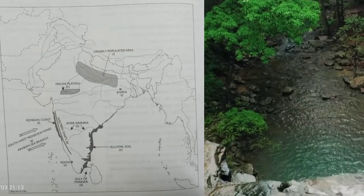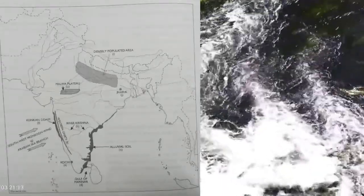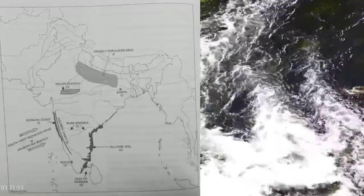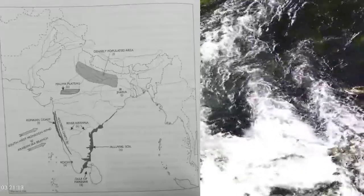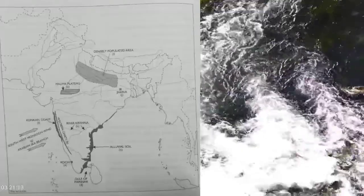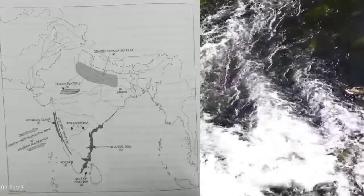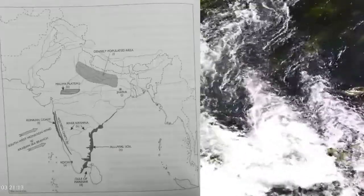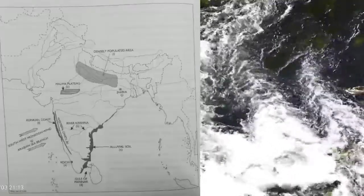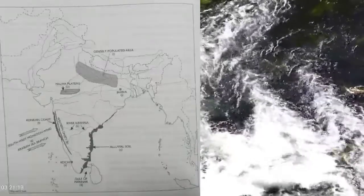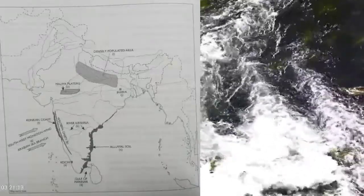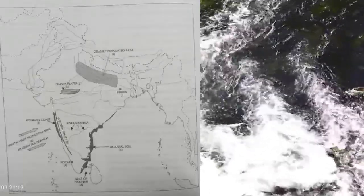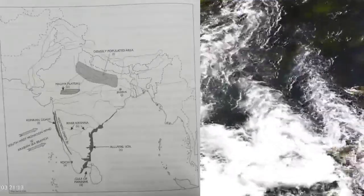Next map: mark and name Kochi and label the river Krishna. Label the Malwa Plateau. Label the Gulf of Mannar. Mark an area of alluvial soil in Peninsular India — 'E'. Mark and label the Konkan Coast — 'F'. Mark with an arrow the direction of the Arabian Sea branch of the southwest monsoon — 'G'. Label the Western Ghats and densely populated area — 'I' and 'J' — the Jharia coal field.